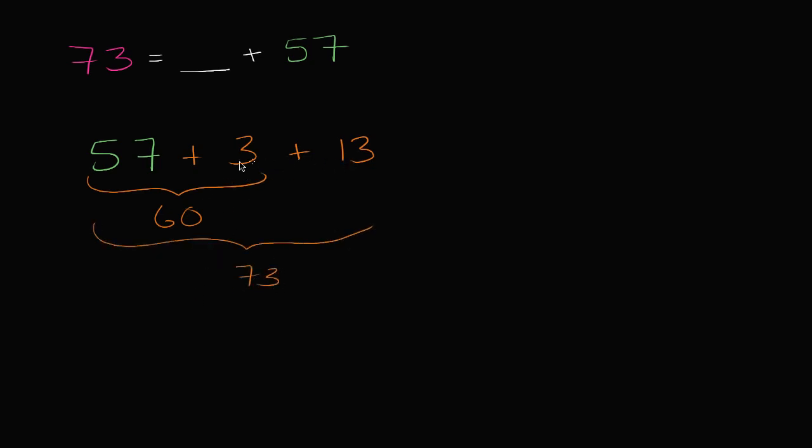So what did I add to 57 to actually bridge the gap? I added three, I added three plus 13. So I added 16. So 16 plus 57 is equal to 73.